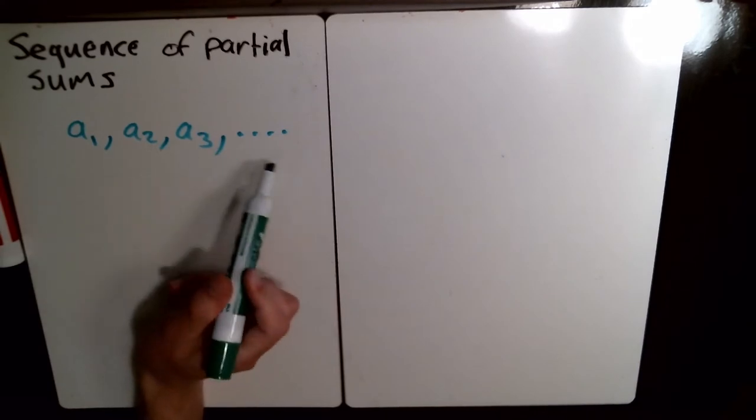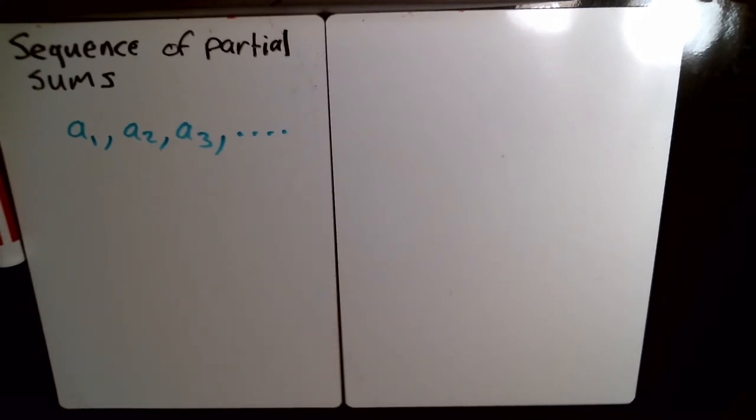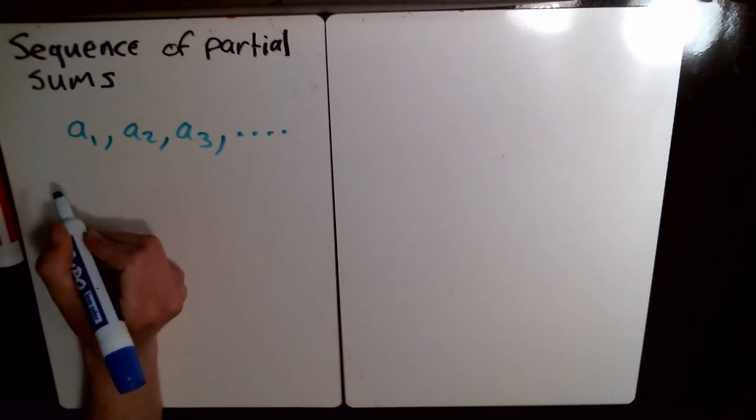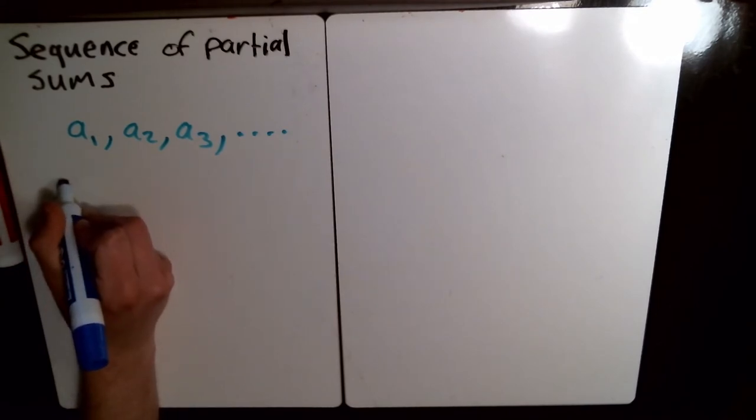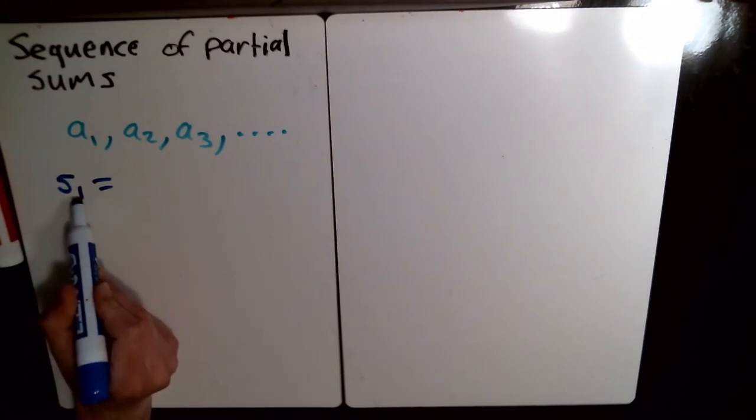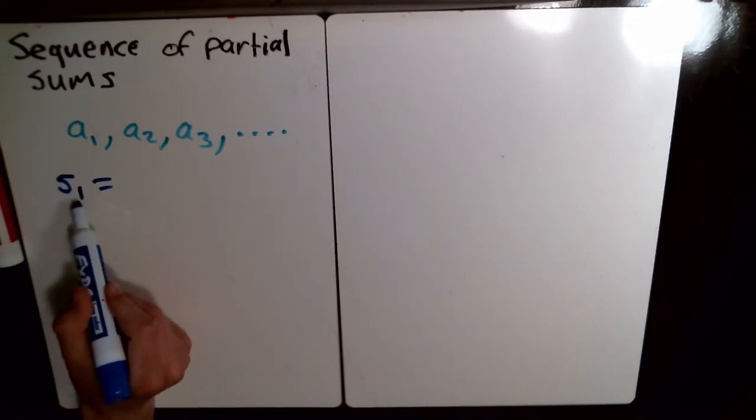You've got a list of numbers, your sequence of numbers here. So what the sequence of partial sums is, is it's a new sequence, and you just are adding up how many terms it tells you. So, s sub 1, this is the sequence of partial sums.